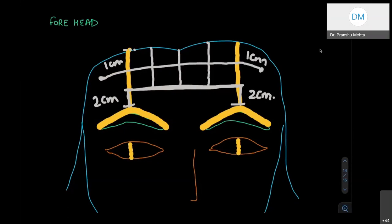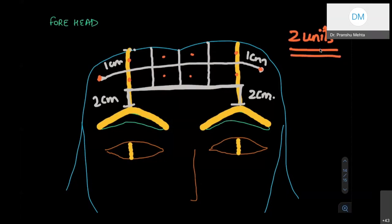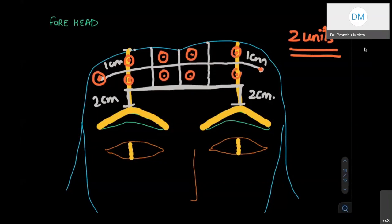The injection points are: in the center of each of the four inner squares, and on the boundaries of the lateral squares, plus the two extended lateral points — giving 10 points total. At each point, we give 2 units of Botox. Counting: 2, 2, 2 = 6; then 8, 10, and continuing — total 20 units for the forehead. These red-marked points are where we'll give the injections.